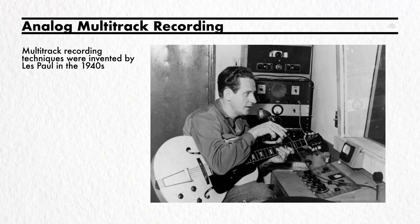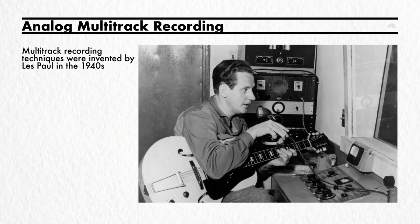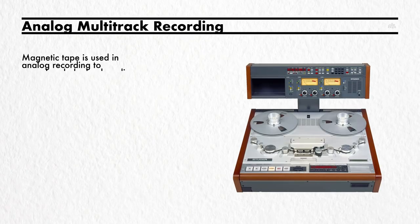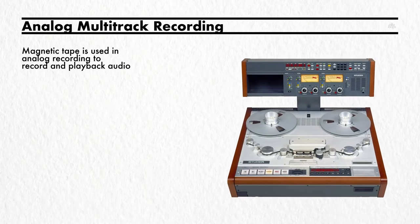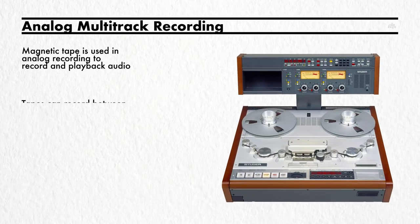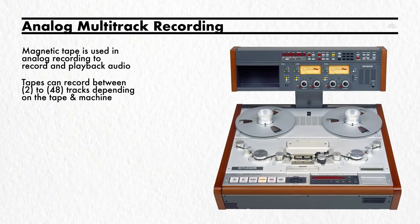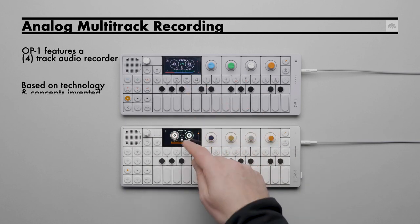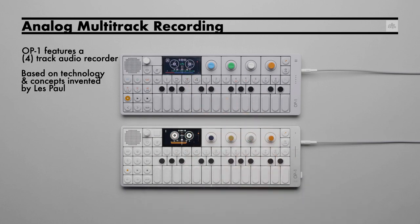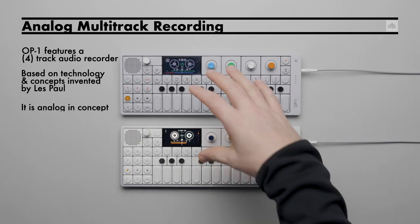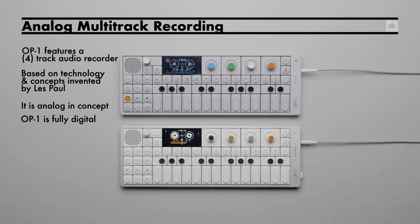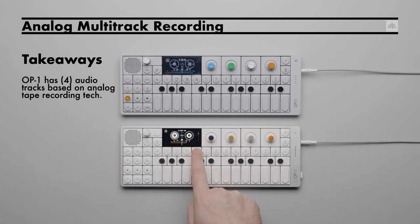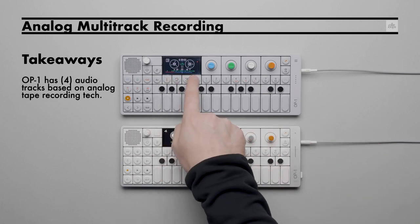Multi-track recording techniques were invented by Les Paul in the 1940s — yes, the same Les Paul who also invented the solid body electric guitar. Magnetic tape was used to record and play back audio in this process. Depending on the recording device, a tape could have between two and forty-eight tracks. OP-1's four-track tape recorder is based on the technology and recording concepts that Les Paul developed several decades ago. Though the concept is analog, OP-1 achieves this digitally. The main takeaways are that OP-1 has four independent audio tracks based on an analog tape recording system.